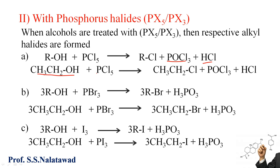Ethanol reacts with phosphorus pentachloride to give ethyl chloride, phosphoryl chloride, and HCl. Next, three molecules of alcohol react with phosphorus tribromide to give three molecules of alkyl bromide and phosphorous acid — H3PO3 is phosphorous acid.